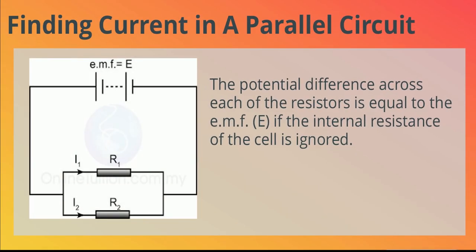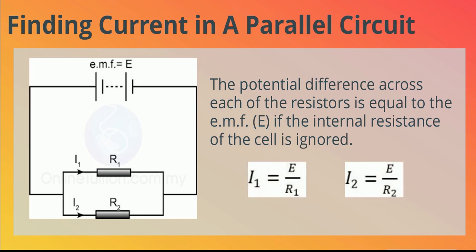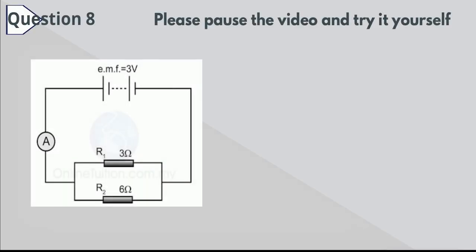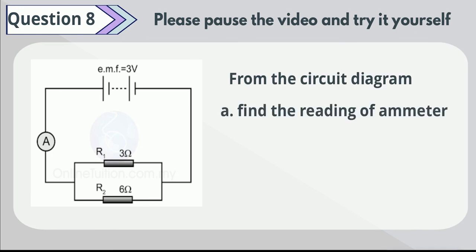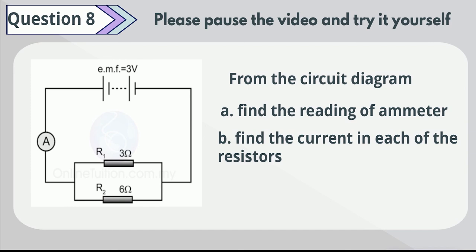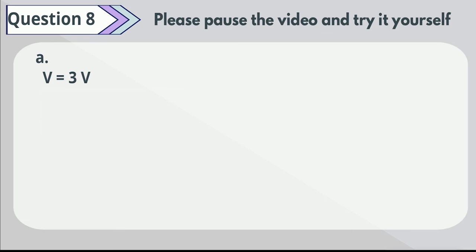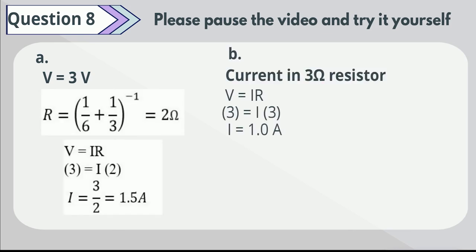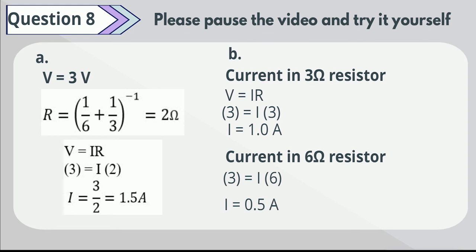In a parallel circuit, the potential difference across each of the resistors is equal to the EMF if the internal resistance of the cell is ignored. By Ohm's law, the following equation is formed. Question 8. From the circuit diagram, find the reading of the ammeter and the current in each of the resistors. Please pause the video to try it yourself. The effective resistance of the two resistors in parallel is equal to 2 ohms. By using the equation V is equal to IR, the ammeter reading is equal to 1.5 amps. The current in the 3 ohm resistor is equal to 1 amp, while the current in the 6 ohm resistor equals 0.5 amps.